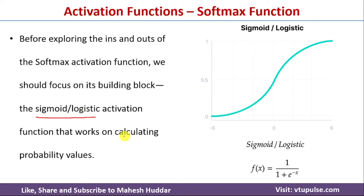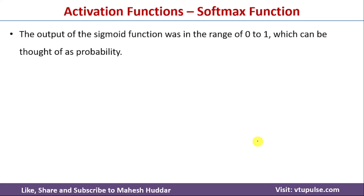The sigmoid or logistic activation function works by calculating probability values in the range of 0 to 1. The curve of the sigmoid function is an S-shape. Its mathematical representation is f(x) = 1 / (1 + e^(−x)), and the values it calculates are in the range of 0 to 1.